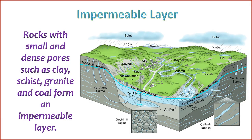Permeable and impermeable rocks refer to the ability of rocks to allow or restrict the movement of fluids, such as water. These properties are essential in understanding the flow of groundwater and the containment of fluids within geological formations. 1. Permeable rocks: Permeable rocks have interconnected pore spaces that allow the easy movement of fluids through them. Examples include sandstone and limestone. Their porous nature and well-connected pore spaces make them conducive to fluid flow. Permeable rocks typically have high porosity, with interconnected pores enabling water or other fluids to move through the rock.